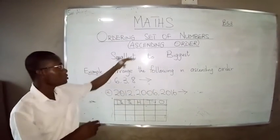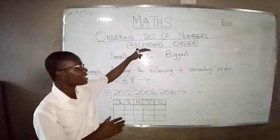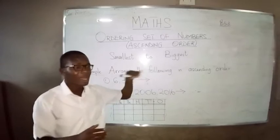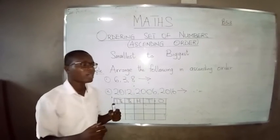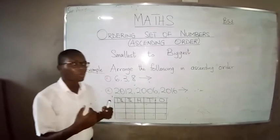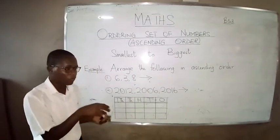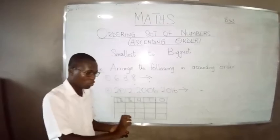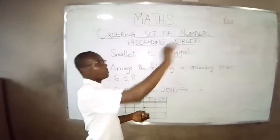Today we are going to take ascending order. Ascending order deals with numbers or things moving from small to big.